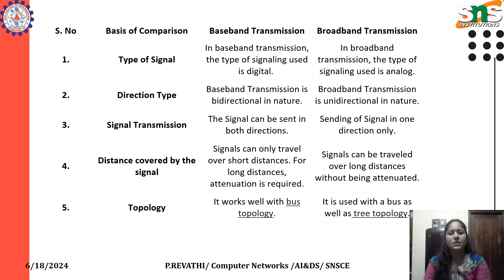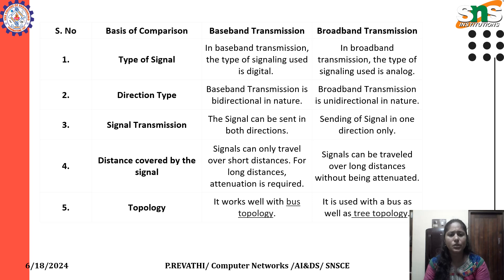Regarding signal transmission: the signal can be sent in both directions in baseband transmission, whereas sending of signal is in one direction only in broadband transmission. Regarding distance covered by the signals: signals can only travel over short distances, and for long distances attenuation compensation is required in baseband transmission. Signals can travel over long distances without being attenuated in broadband.